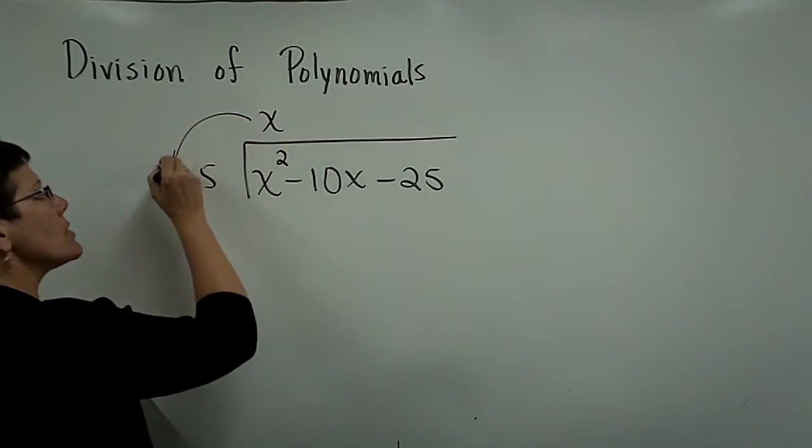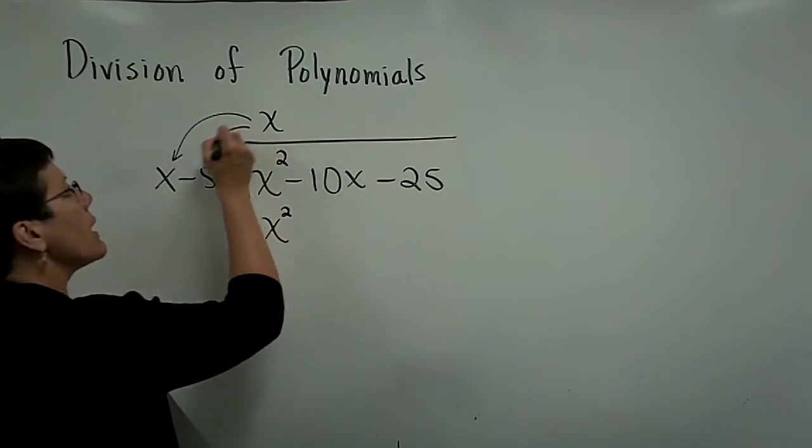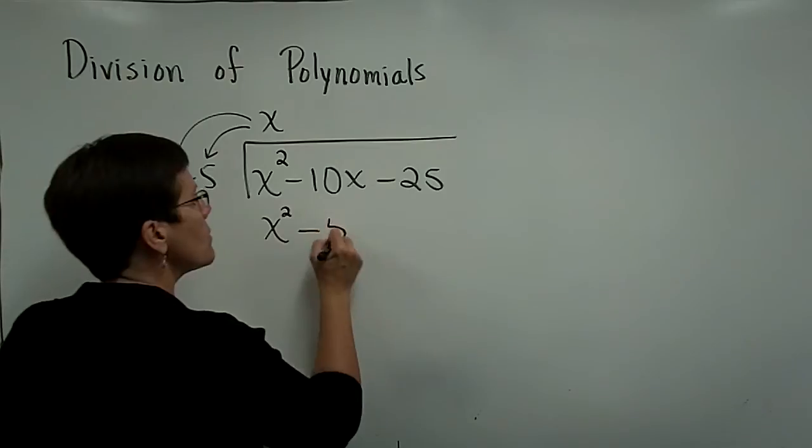You would distribute this and just check that out, see if that's really true. So x times x is really x squared. And x times the minus 5 is a minus 5x.